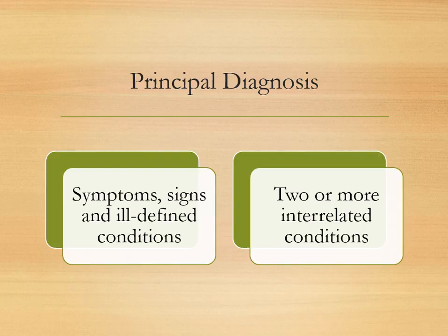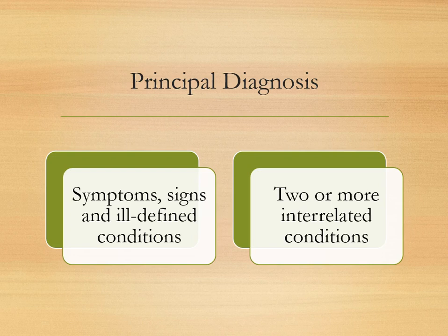First up: signs and symptoms. Signs and symptoms are not to be used as a principal diagnosis when a related definitive diagnosis has been established. For example, if a patient has chest pain and the doctor definitively determines the patient has a heart attack, we would not code the chest pain — we would just code the myocardial infarction.